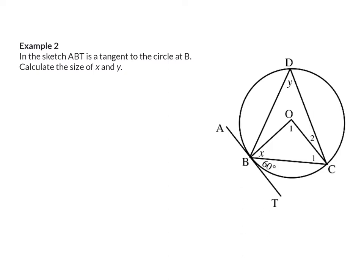Example 2: in the sketch, ABT is a tangent to the circle at B, and they ask us to calculate the size of X and Y. Once again, I'm going to start with our new theorem: the tangent is perpendicular to the radius OB. So angle OBT is 90 degrees. My reason: tangent perpendicular to radius. Now we know angle OBT consists of X and 60 degrees, and that should add up to 90. So angle X is 90 minus 60, which gives X equals 30 degrees.